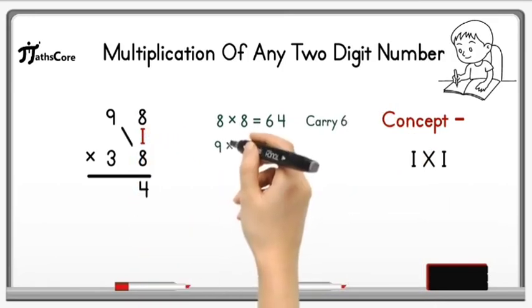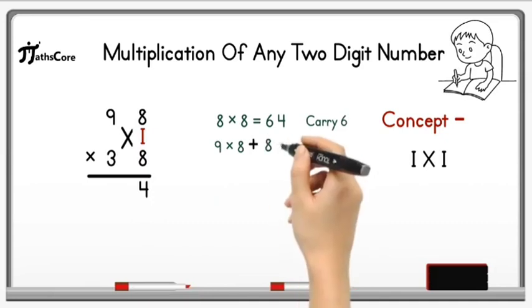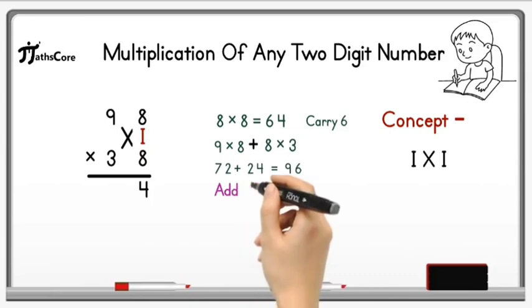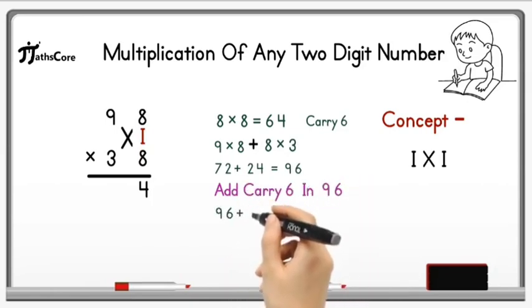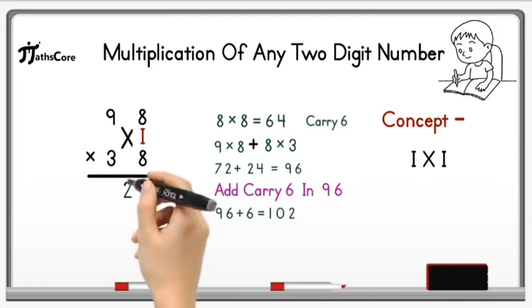After that do cross multiplication and addition. So 9 × 8 plus 8 × 3. 9 × 8 is 72 and 8 × 3 is 24. 72 plus 24 is equal to 96, and add this carry 6 in 96. So 96 plus 6 is equal to 102, which is a 3 digit number. So write down 2 here and take 10 as a carry.